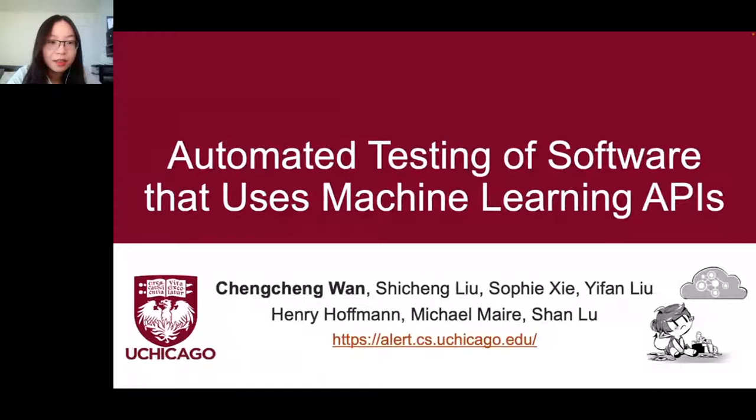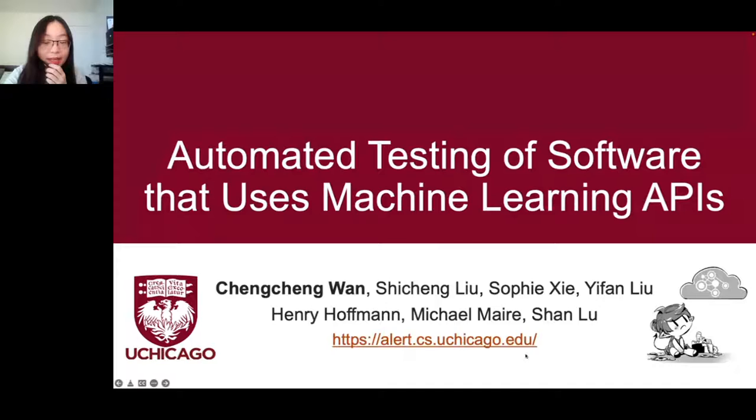The next talk is by Chen Chen on automated testing of software. I'm Chen Chen. Today I will present my work on automated testing of software that uses machine learning APIs. We have released our benchmark and code. Many cloud providers offer machine learning APIs covering a wide range of cognitive tasks related to computer vision, natural language processing, and others. The neural networks behind these APIs are pre-trained by cloud providers and offer inference services from the cloud.